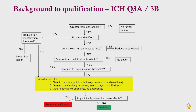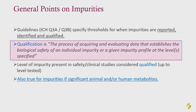This decision tree can be found in both the Q3A for substance and Q3B for product guidances. Q3A and B specify thresholds for when impurities are reported, when they are identified, and when they are qualified. Qualification is a process of acquiring and evaluating data that establishes a biological safety for an individual impurity or impurity profile at a specified level. Levels of impurities present in any safety or clinical studies are considered qualified up to the levels that were in the batch that was tested.